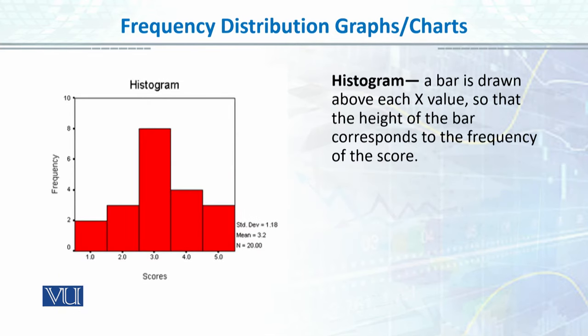The first graph which we can present for grouped frequency distribution or ungrouped frequency distribution graphically is histogram. Histogram basically is a kind of bar chart, in which you have a rectangular bar, and the height of the bar tells you how much frequency it is.